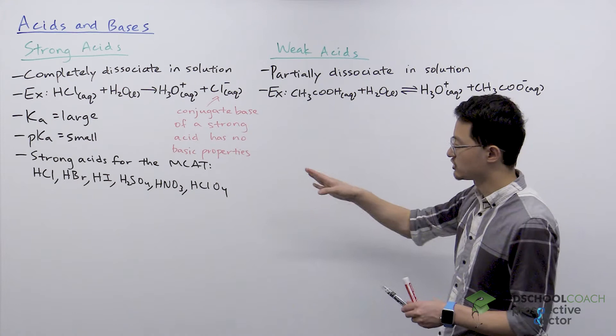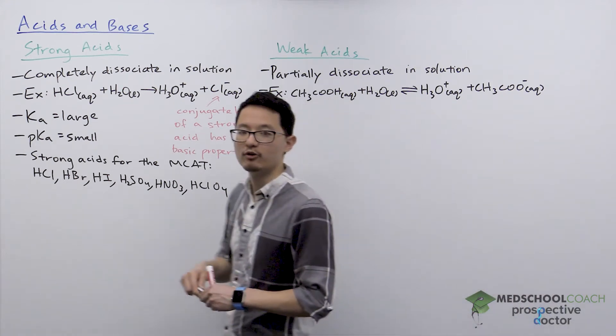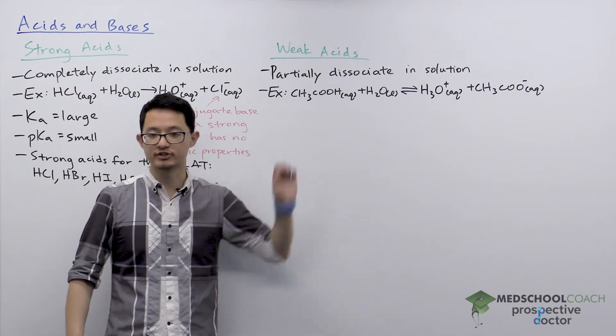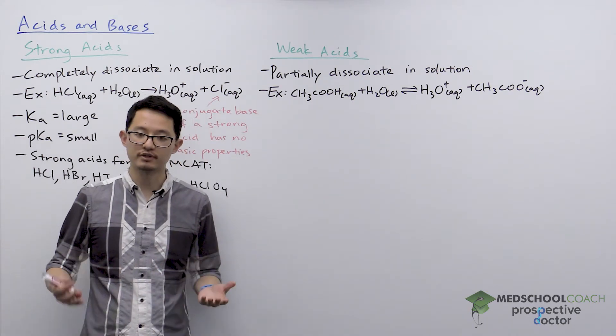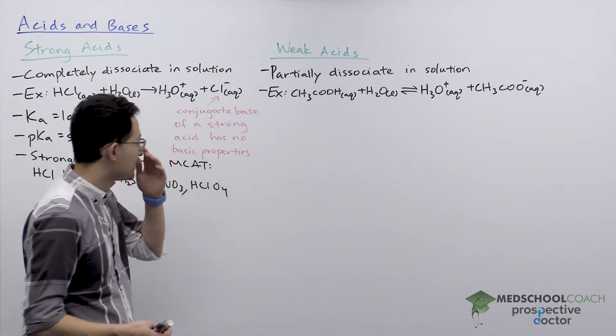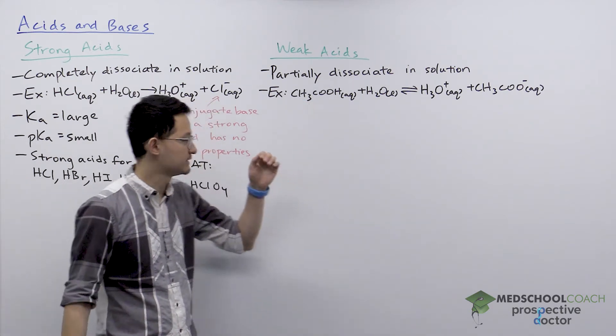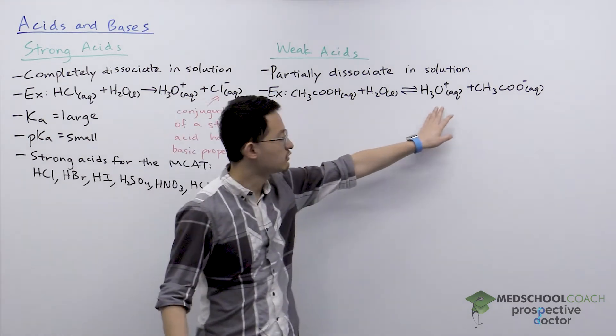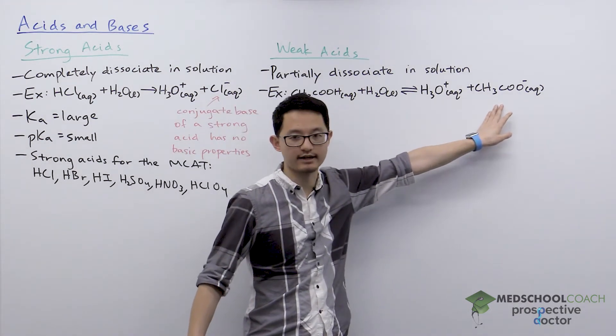Alright, so that's strong acids. Let's now take a look at weak acids. Weak acids, as we said, they don't dissociate completely. They only partially dissociate. We've got our example here with acetic acid, common example of weak acid. When it's added to water, it can dissociate to form hydronium ions and acetate ions.